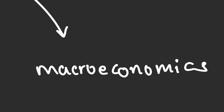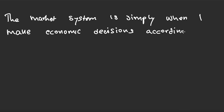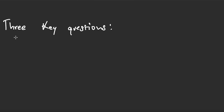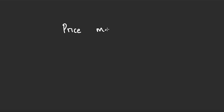Economics is divided into two branches: microeconomics, where we study particular markets, and macroeconomics, where we study the whole economy. The market system is when economic decisions are made according to the price of goods and services, which depends on supply and demand. The three key questions of economics are: what to produce, how to produce, and for whom to produce.